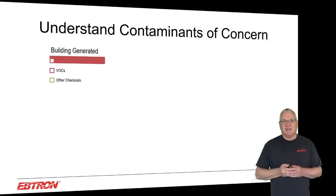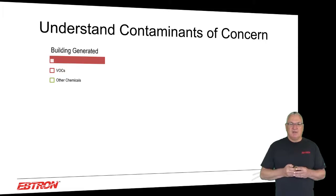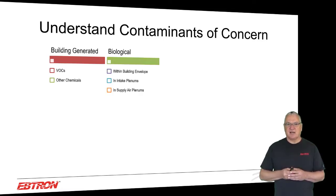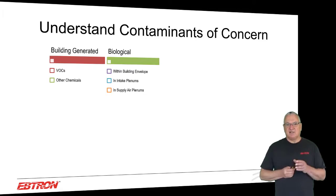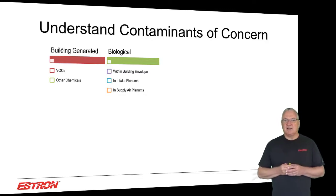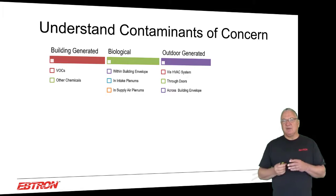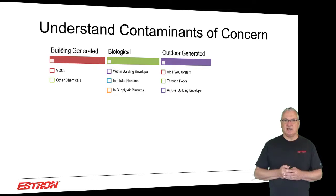When we drill down into the contaminants of concern, the building-generated contaminants are basically VOCs, but we can also have other chemicals. On the biological side, we can have contaminants within the building envelope, in intake plenums and supply plenums — until recently mostly moisture-based contaminants: molds and fungal growth. For outdoor-generated contaminants, we talk about entry via the HVAC system, meaning poor filter integrity, so we may be bringing in untreated outdoor air.